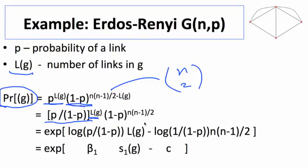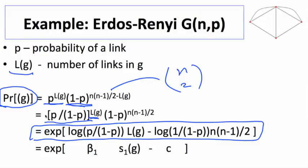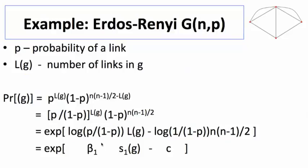This is the probability of a given graph under Erdos-Renyi. You can rewrite that: let's pull the L(g)s out, so we get p over one minus p raised to the L(g) times one minus p to the n(n-1)/2. We can rewrite that as an exponential function as follows. This is equivalent to exponent of log to get the p over one minus p times L(g) minus log of this extra part. So it looks like exponent of some factor, where now what's happening is the beta one here is capturing this factor times the L(g).